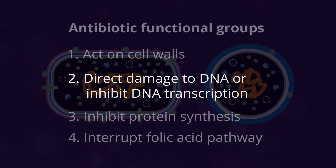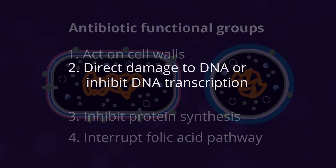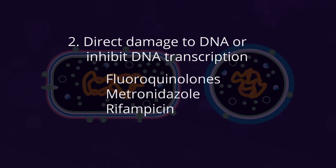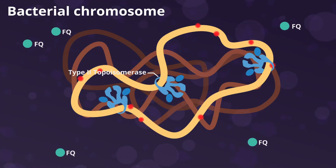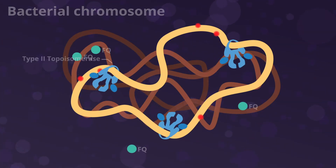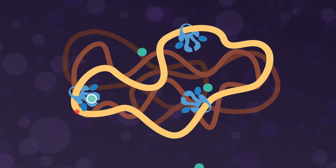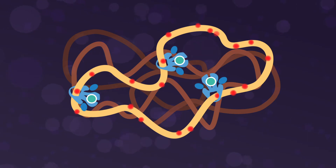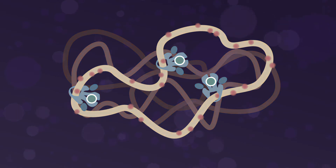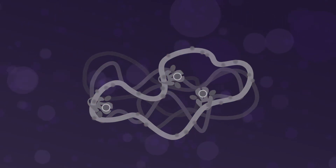Next, we're going to look at some examples of antibiotics that damage DNA or inhibit DNA transcription. Fluoroquinolones act on enzymes called type 2 topoisomerases, which are responsible for the effective supercoiling and replication of DNA. By impeding these enzymes, fluoroquinolones create structural damage to DNA, resulting in bacterial cell death.